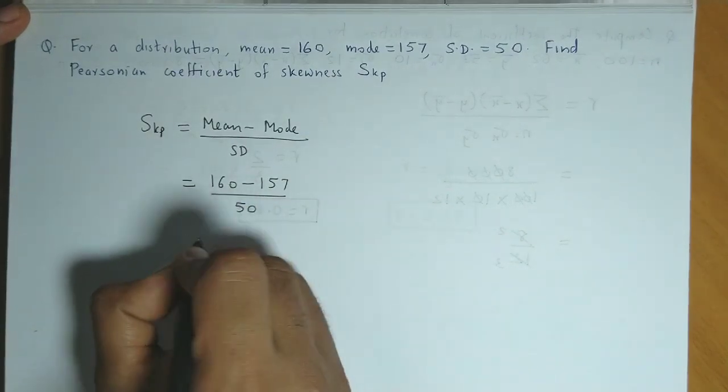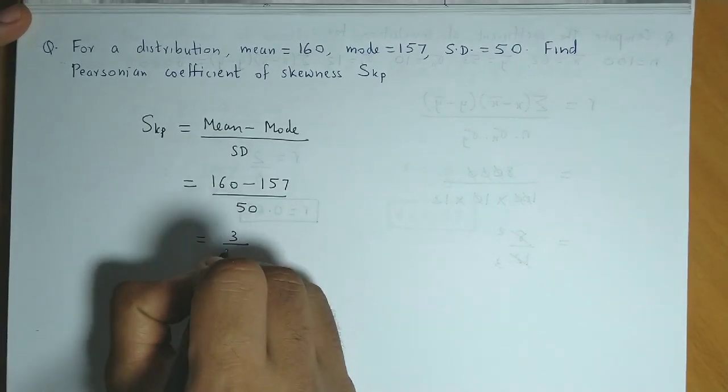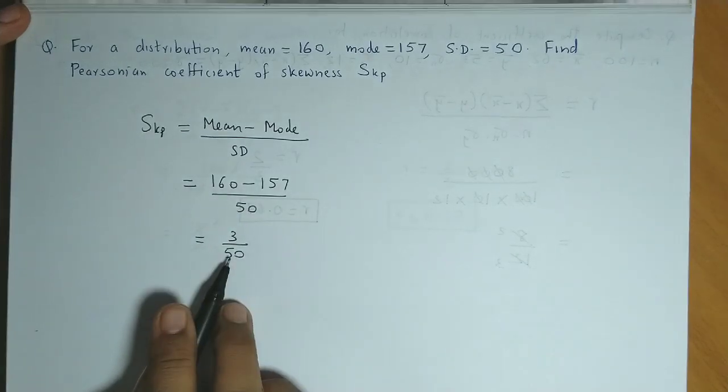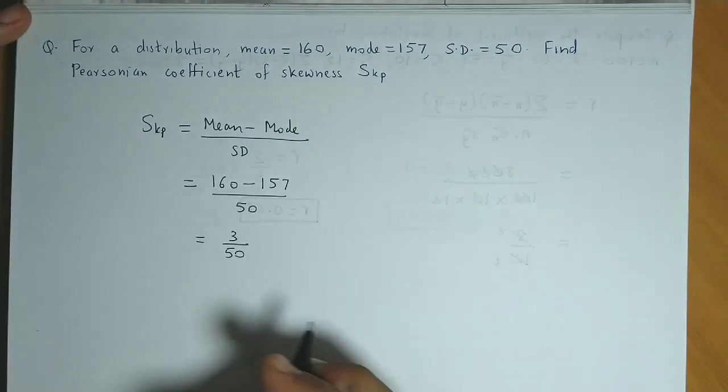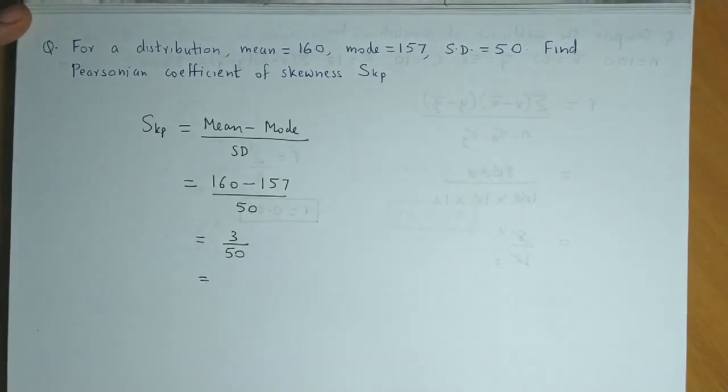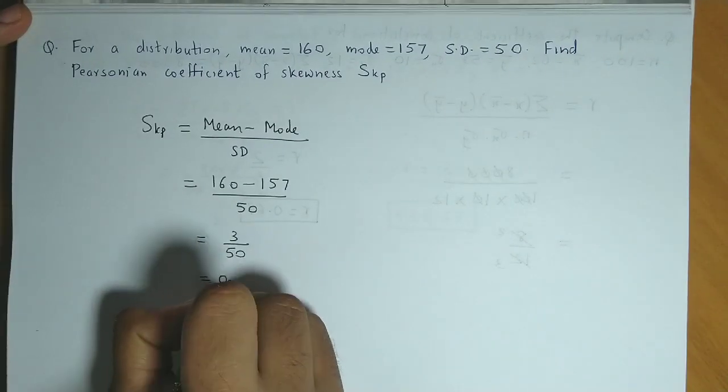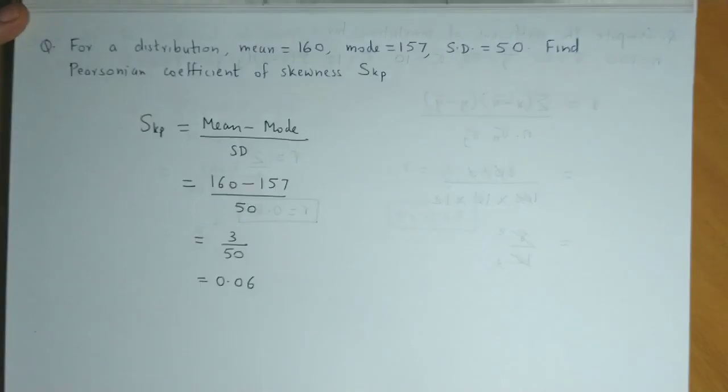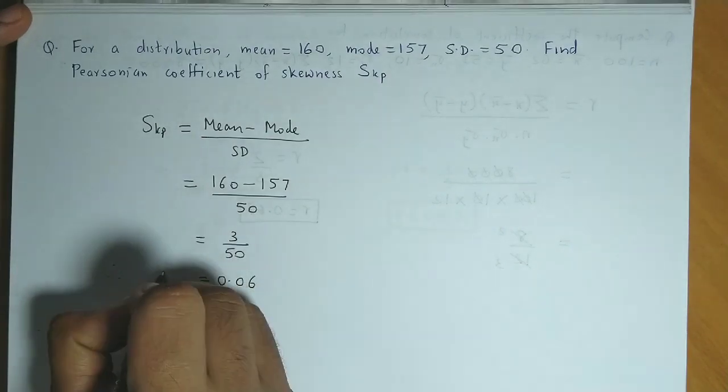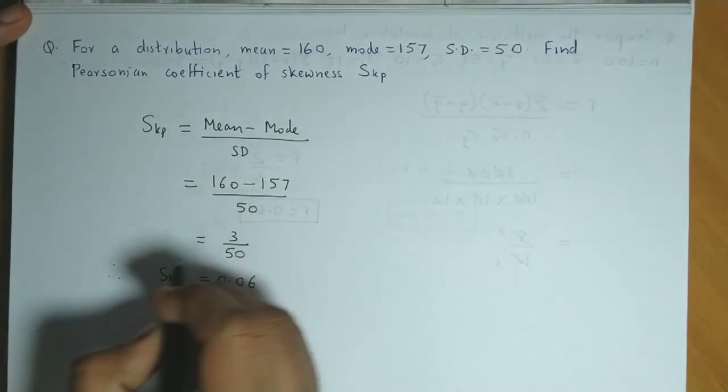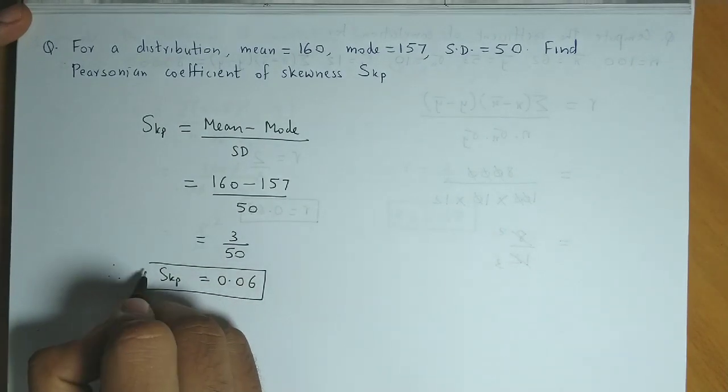Now the difference is 3 divided by 50. We can write 6 divided by 100. So the division is easy. And we get the answer as 0.06. So therefore, we can say SKP value is 0.06.